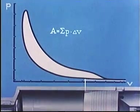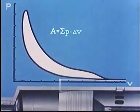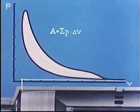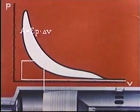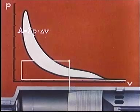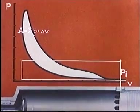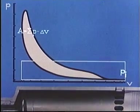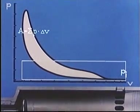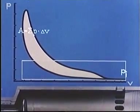One could imagine the same area being produced by a compression stroke under atmospheric pressure, and an expansion stroke with a constant pressure on the piston. This constant pressure, PI, the mean indicated pressure, can be determined so that it gives the same area as in the actual diagram.